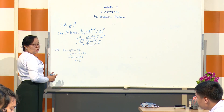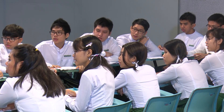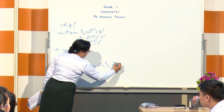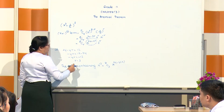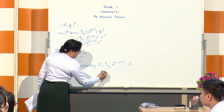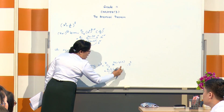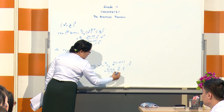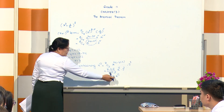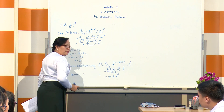The term containing x to the power 12: set 24 minus 4r equals 12, so minus 4r equals minus 12, giving r equals 3. The term equals 8C3 times x to the power 12 times 2 to the power 3.